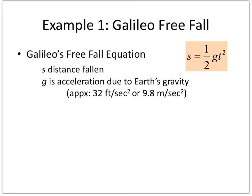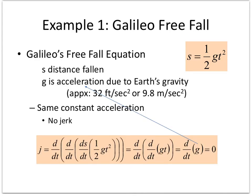Galileo's free fall equation: this equation is given where g is the acceleration due to Earth's gravity. A good physics teacher will give this in metric units. If I drop something and it falls to the ground with constant acceleration, it's never going to jerk up or jerk down. This would be a way to prove that — take the third derivative and you get zero.